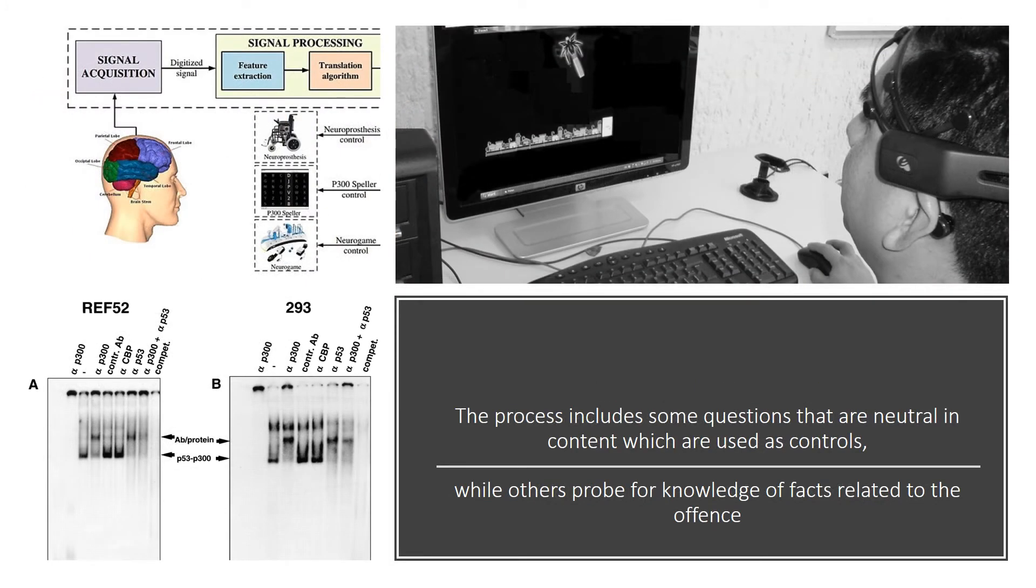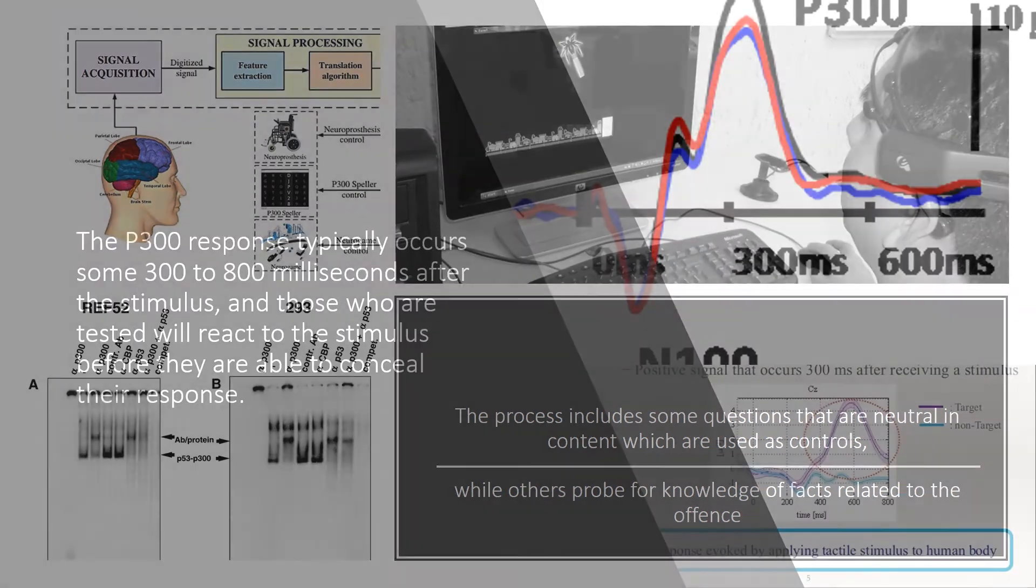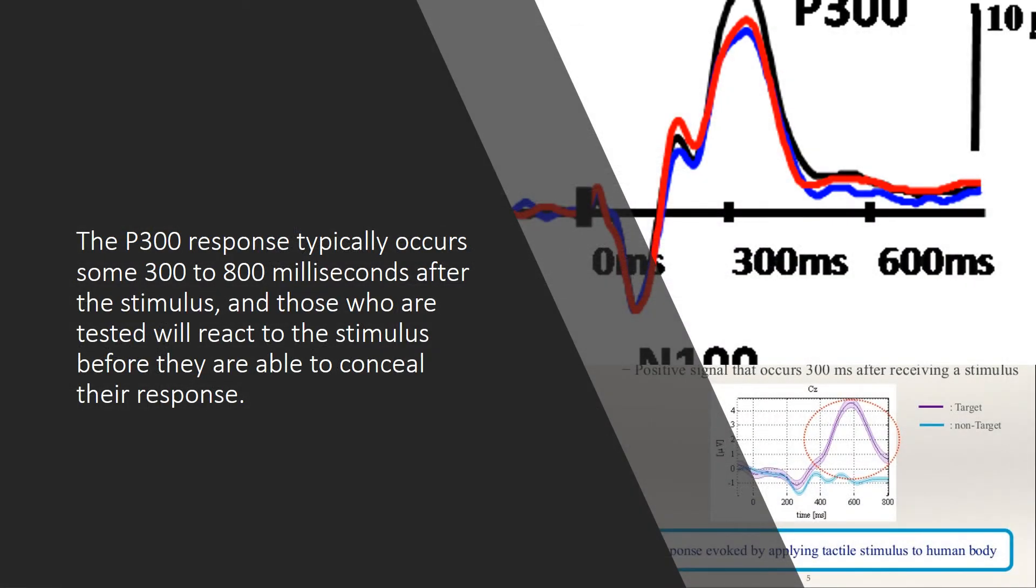The process includes some questions that are neutral in content which are used as controls, while others probe for knowledge of facts related to the offense. The P-300 response typically occurs some 300 to 800 milliseconds after the stimulus, and those who are tested will react to the stimulus before they are able to conceal their response.